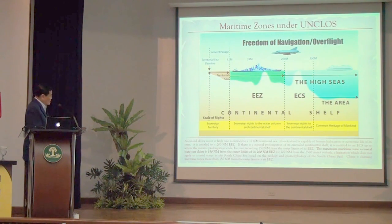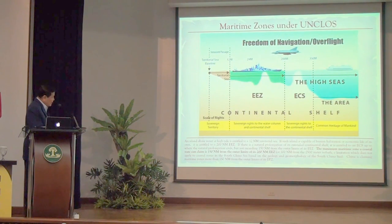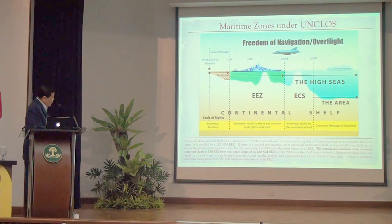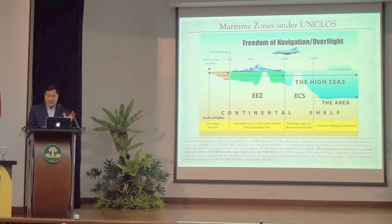From the edge of the EEZ, you measure 150 nautical miles — that's the extended continental shelf. A coastal state can claim all the minerals, oil, and gas here if there is a natural prolongation of the continental shelf. Beyond the EEZ, the high seas start. The fish in the high seas belong to mankind — all states, coastal or landlocked, can fish in the high seas without securing permission from anyone.